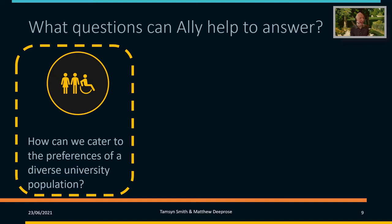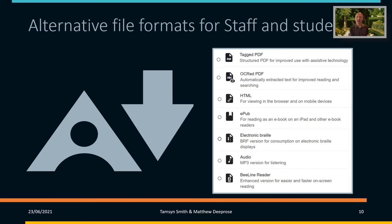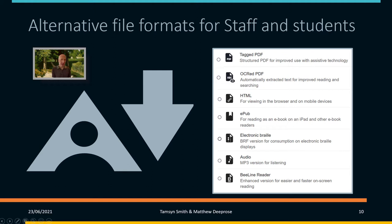So Blackboard Ally can help to answer three big questions. I'll be showing you these one by one. The first is: how can we cater to the preferences of our diverse university population? What Blackboard Ally provides is, for content within Blackboard, it will allow you to access alternative file formats. If you prefer PDFs but want to make sure they are tagged so that you can navigate through different headings and levels, you can use that.